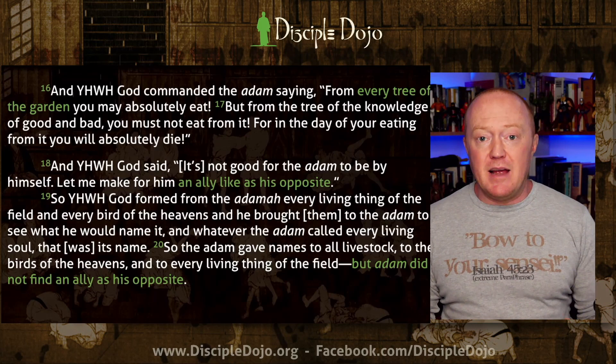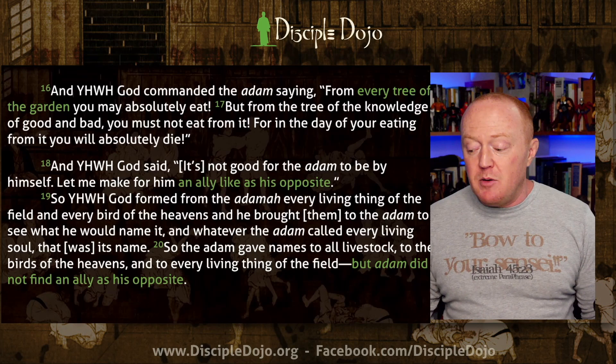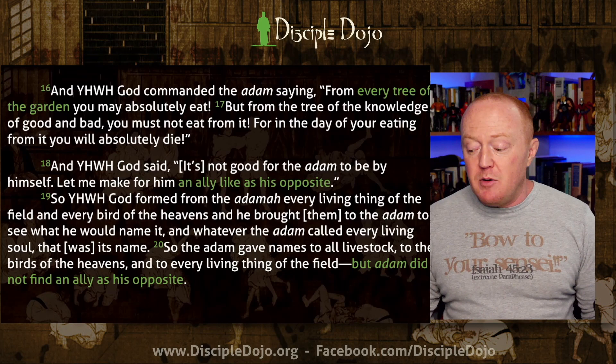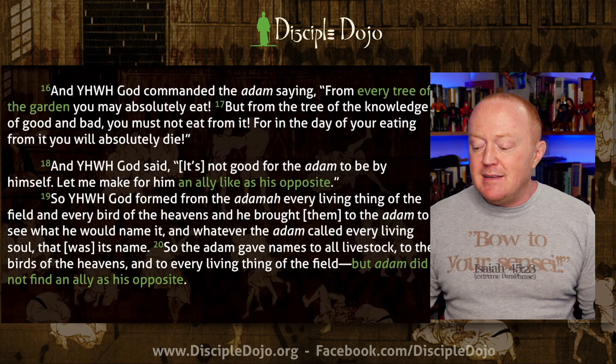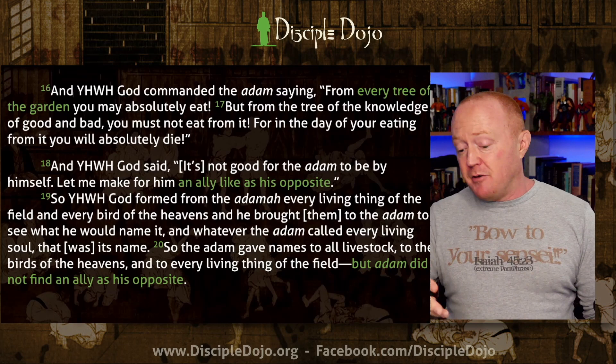God is saying adam needs an ally — one to deliver and rescue him from being by himself, because this is not good. So Yahweh God formed from the adamah every living thing of the field and every bird of the heavens, and brought them to the adam to see what he would name them. Whatever the adam called every living soul, that was its name. So the adam gave names to all livestock, to birds of the heavens, and to every living creature — but adam did not find an ally as his opposite.